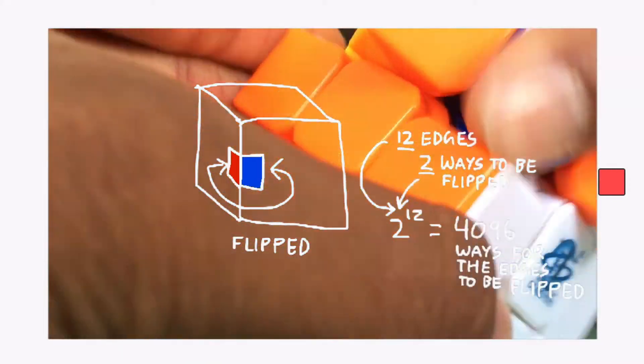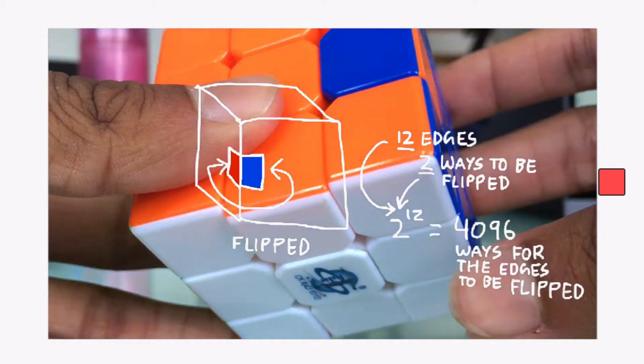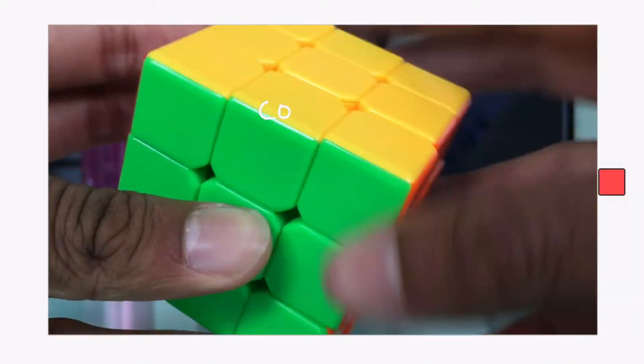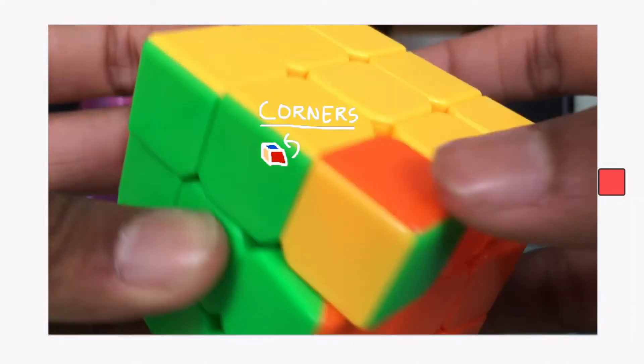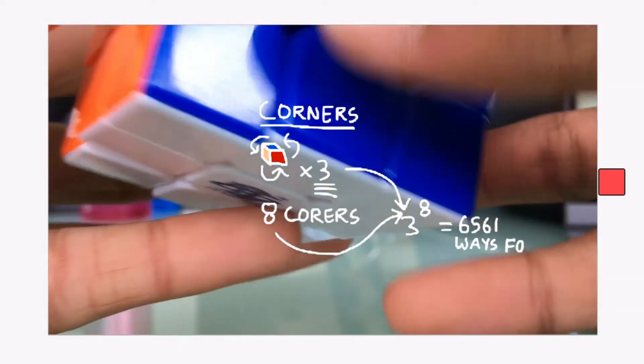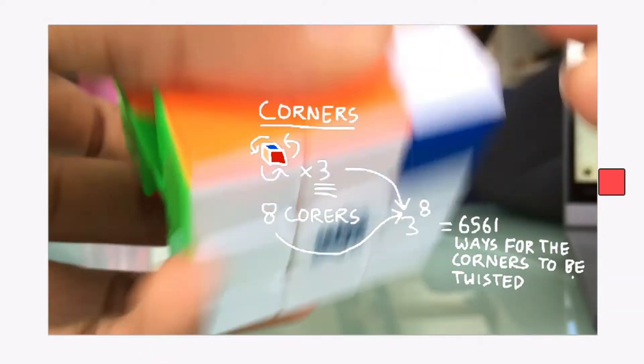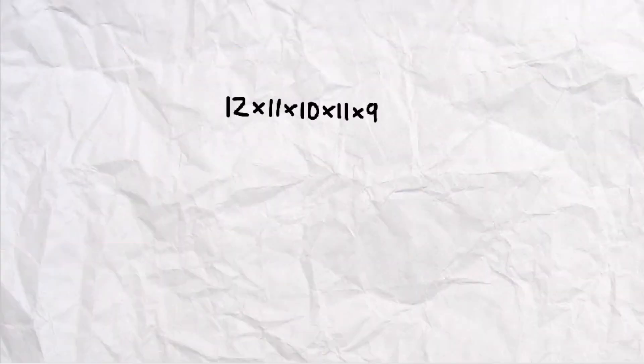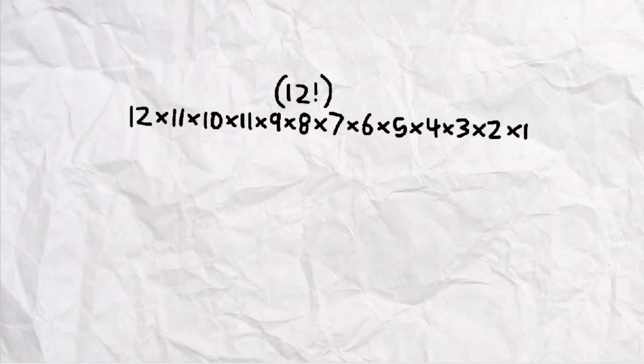So after further calculations, we find out that there are 2 to the power of 12 different combinations for the edges to be arranged when flipped and not flipped. Doing the same for the corners, there are 3 to the power of 8 different combinations for these to be rotated and twisted, as there are 3 sides and 8 spots.